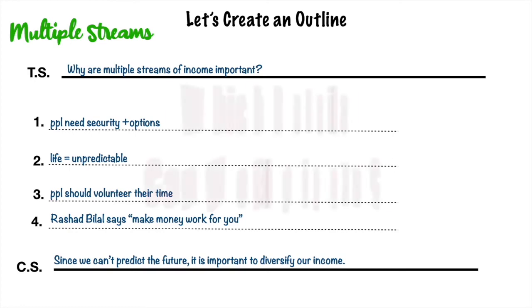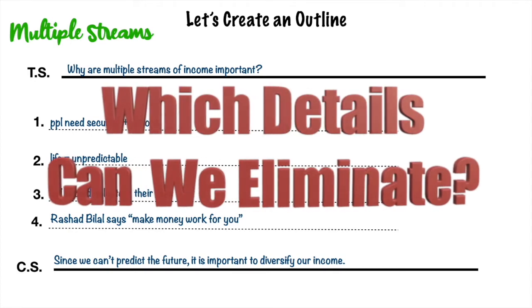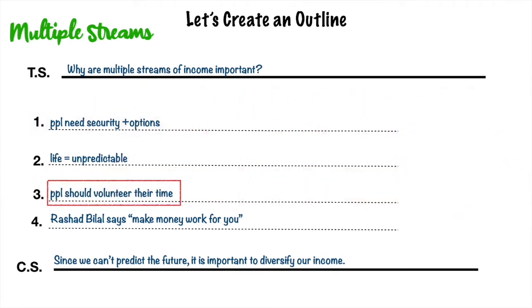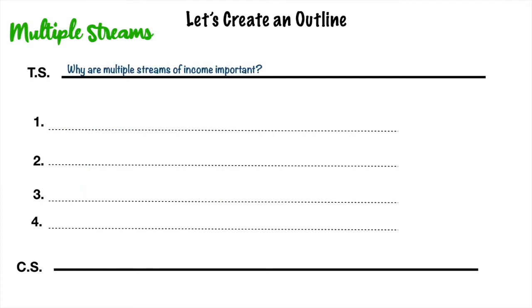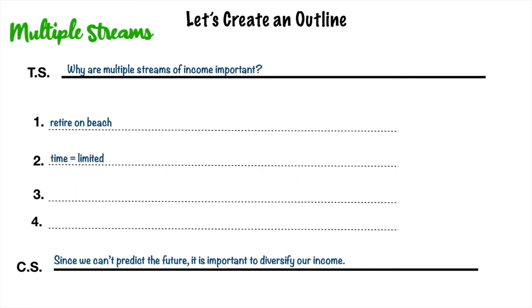Which detail is irrelevant? It's 'people should volunteer their time.' Let's look at another example with the same topic sentence and concluding sentence.